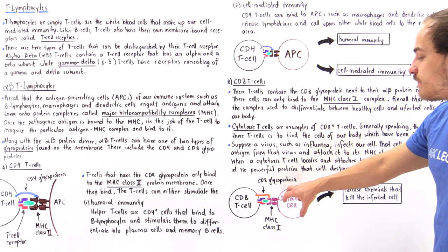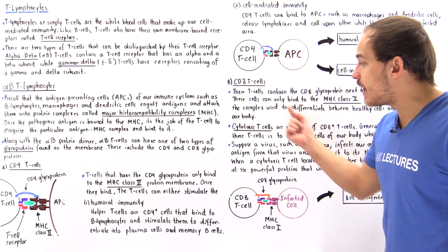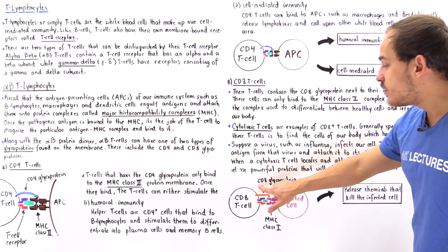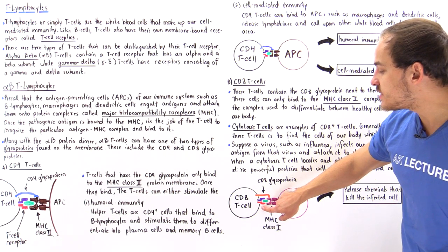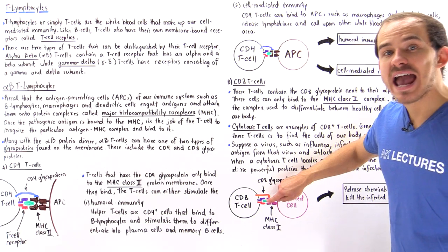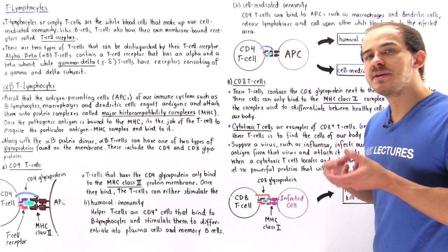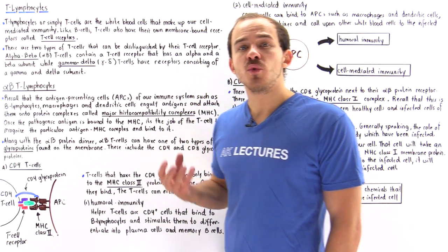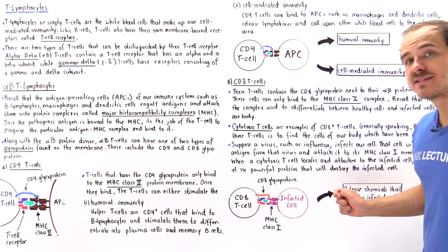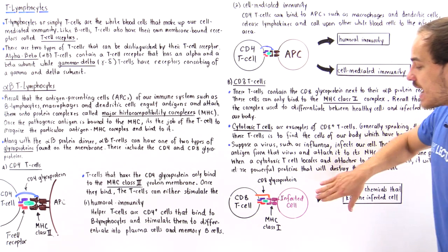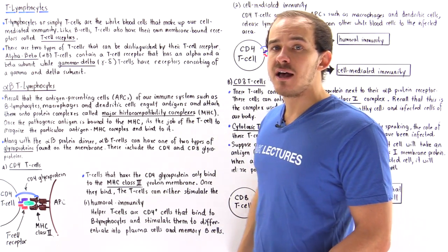Once the cell is infected and displays the antigen, the CD8 T cell — for example, the cytotoxic T cell — approaches, and the CD8 glycoprotein binds onto the MHC class I complex. The T cell receptor recognizes the antigen, and when the binding process takes place, the CD8 T cell releases very powerful proteolytic proteins that drill holes and digest the membrane of that infected cell, ultimately killing it and destroying it before it can infect other healthy cells of our body.